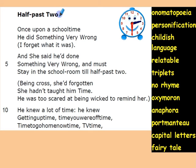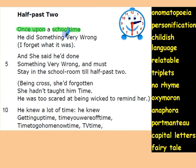So 'Half Past Two' — that is the time — 'once upon a school time.' The very beginning of the poem is like a fairy tale: 'once upon a time.' You can see 'schooltime' has no space, which represents childish language. 'Once upon a schooltime' — it's a very relatable point because we can all remember the time that we spent at school.